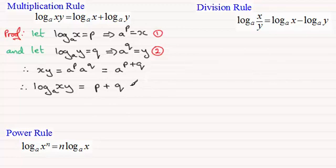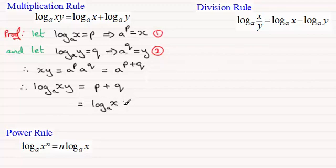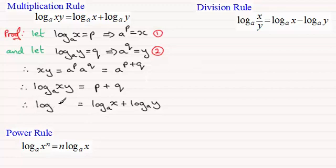And if that's the case, we can see from these two results that this must be equal to the log of x in base a plus the log of y in base a. So therefore you can see we've proved that result: the log of xy in base a is equal to the log of x in base a plus the log of y in base a.